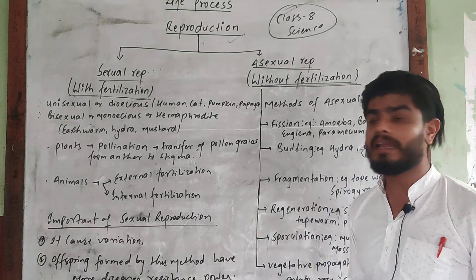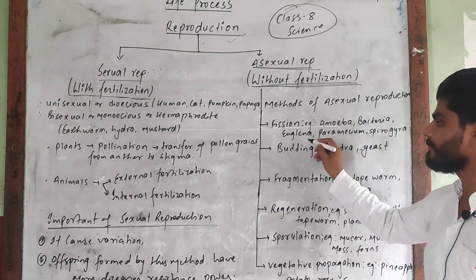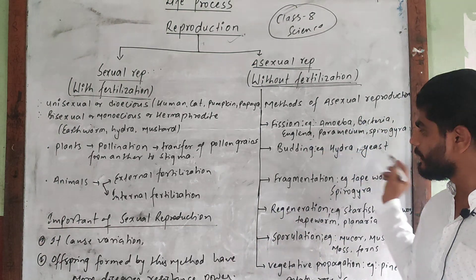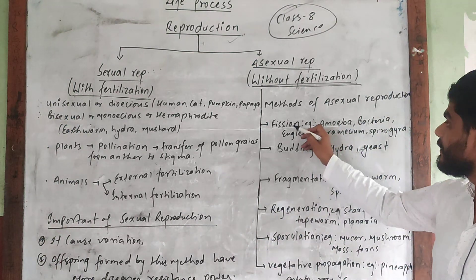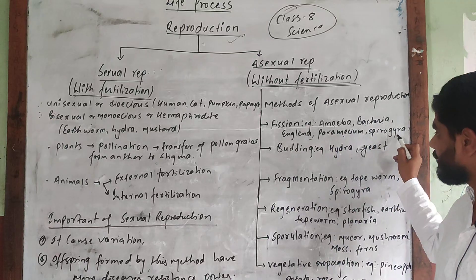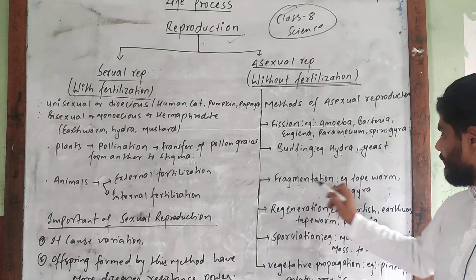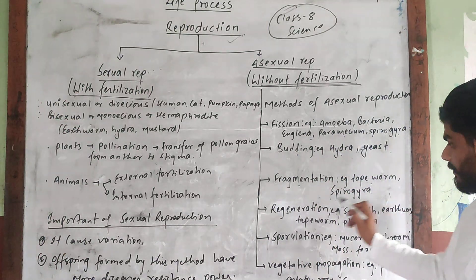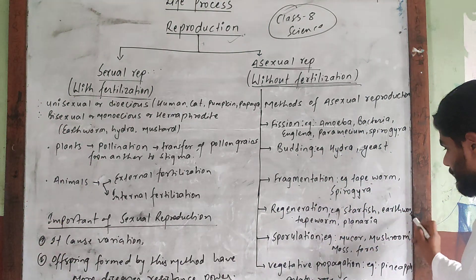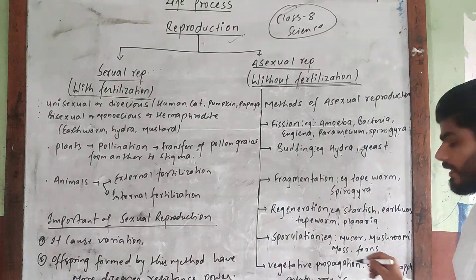Most 99.9% of the time you need to know examples. Fission: amoeba, bacteria, euglena, paramecium. Budding: hydra, yeast. Fragmentation: tapeworm, spirogyra. Regeneration: starfish, earthworm, tapeworm, planaria.